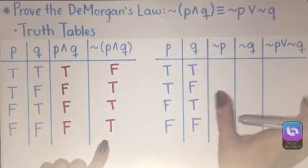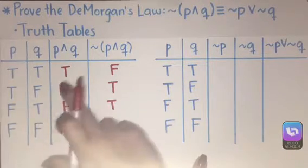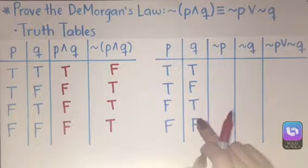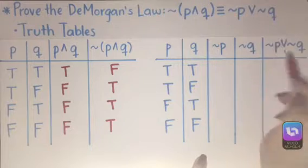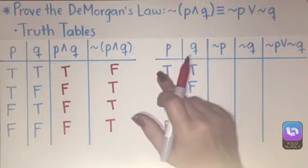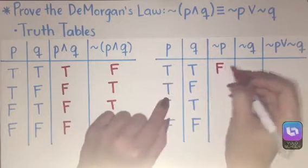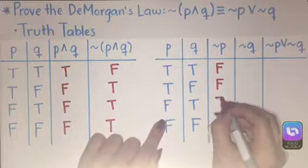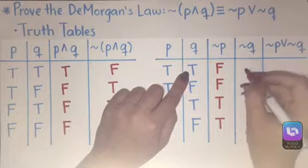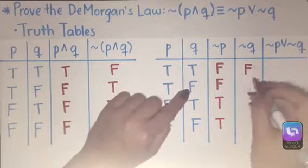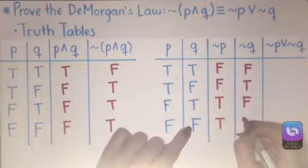Now we're going to solve for the negation of P or negation of Q. We already have the same values of P and Q at the beginning of our table. We need to find first the negation of P and the negation of Q before we can put them together. The negation of P will be the opposite of these truth values: opposite of true is false, false, and opposite of false is true, true. Same for Q: opposite of true is false, opposite of false is true, negation of true is false, and the negation of false is true.